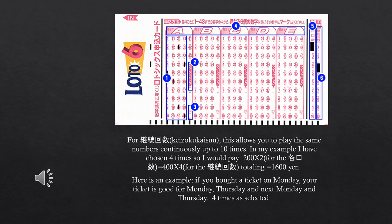For keizoku kaisu, this allows you to play the same numbers continuously up to 10 times. In my example I chose four times, so I would pay 200 yen times 2 for kaku kuchi suu, which equals 400 yen, times 4 for the keizoku kaisu, totaling 1,600 yen. For example, if you bought a ticket on Monday, your ticket is good for Monday, Thursday, and next Monday and Thursday — four times as selected. That's it for this video, guys. I hope this helps. Like and subscribe to my channel. Bye!